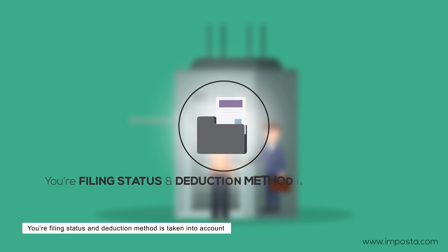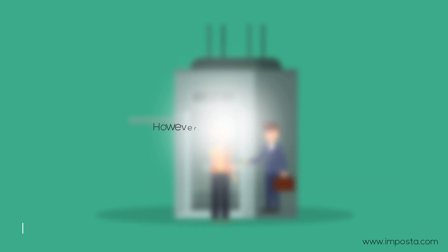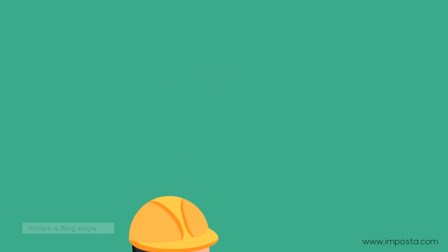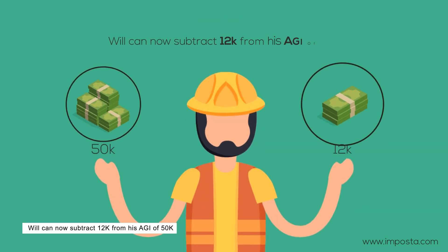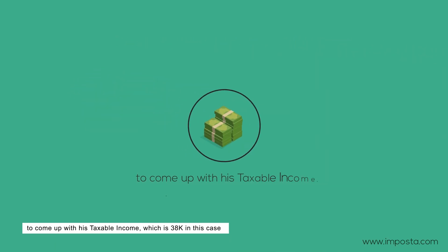Your filing status and deduction method are taken into account. For this example, William is filing single and will use the standard deduction method for a deduction of $12k. Will can now subtract $12k from his adjusted gross income of $50k to come up with his taxable income, which is $38k in this case.